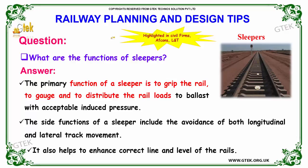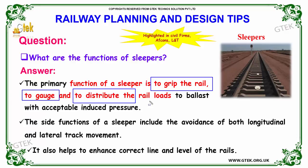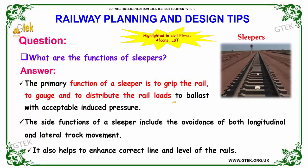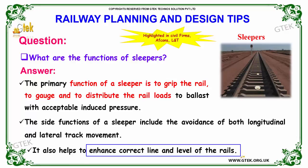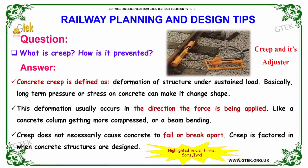The primary function of a sleeper is to grip the rail to gauge and to distribute the rail loads to ballast with acceptable induced pressure. The side functions of a sleeper include the avoidance of both longitudinal and lateral track movement, and it also helps to enhance correct line and level of the track.